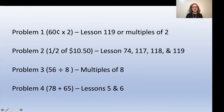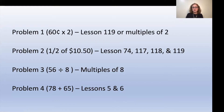As with all review lessons, I will provide lesson numbers for the problems that your child missed or struggled with. If your child struggled with problem one, which is 60 cents times two, go ahead and review lesson 119 or work on their multiples of two by playing math card games. For problem two, which is one half of $10 and 50 cents, you can review lessons 74, 117, 118, and 119.